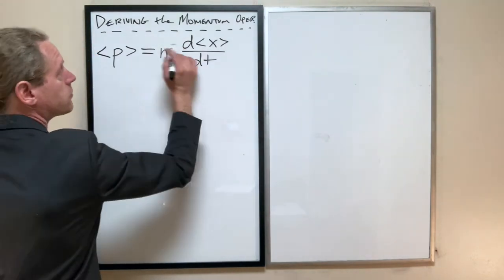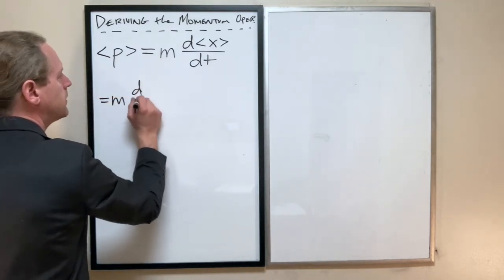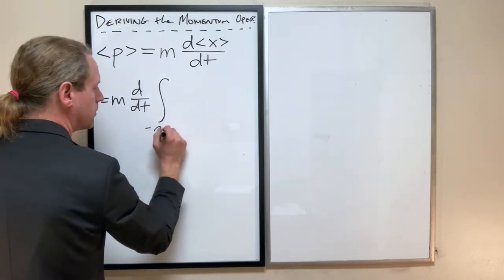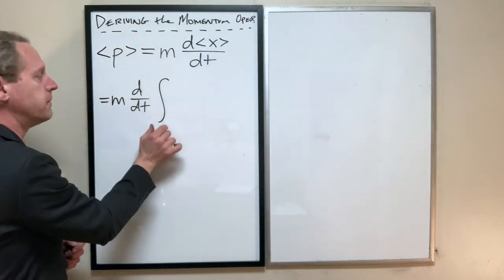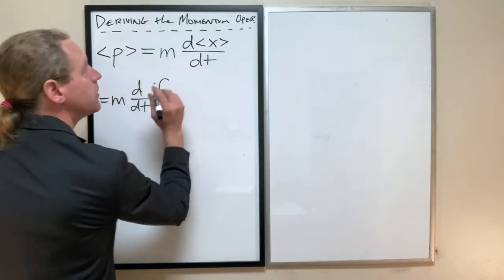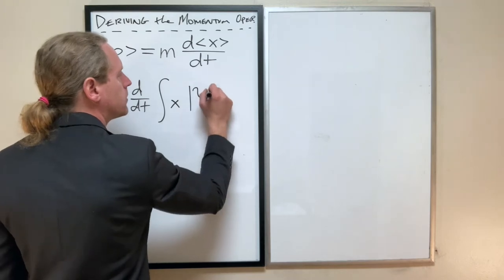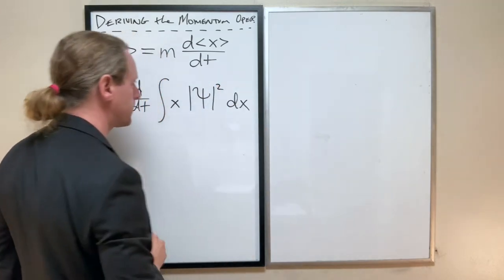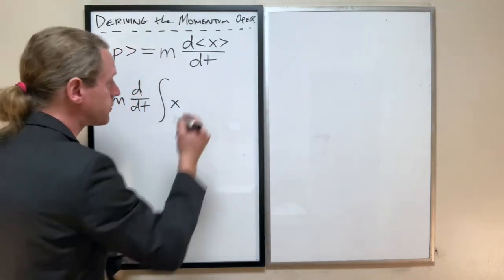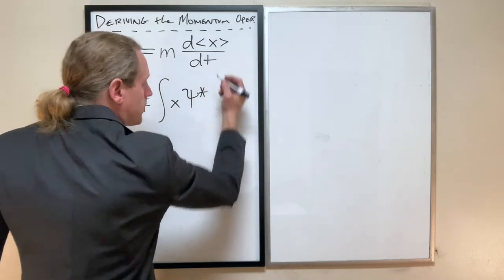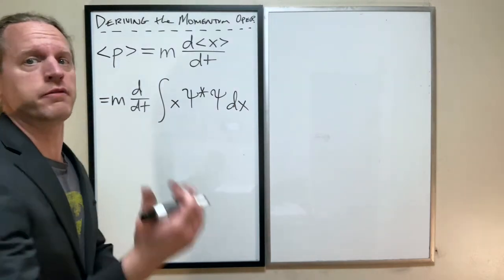We're going to take M times d/dt of our integral. By the way, from here on out, I'm going to drop the limits. It's always going to be assumed that we're going to go from negative infinity to positive infinity. I'm going to write it strictly as Psi conjugate Psi dx. This will be the easiest way to deal with it.